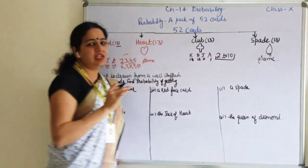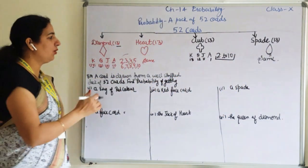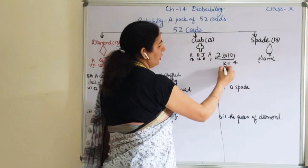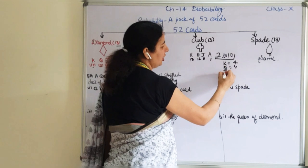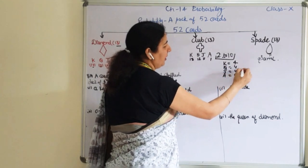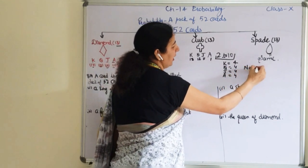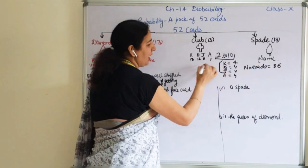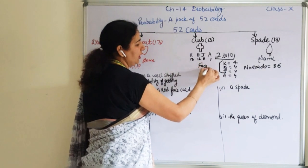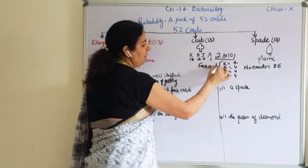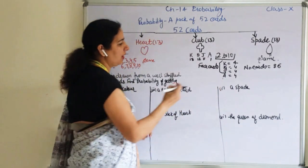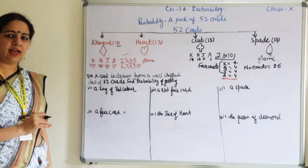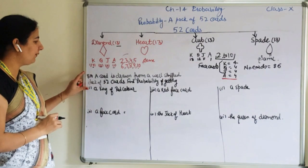In total we are having 4 kings, 4 queens, 4 jacks, 4 aces, and 36 number cards. King, queen, and jack are known as face cards. We do not consider the ace as a face card.